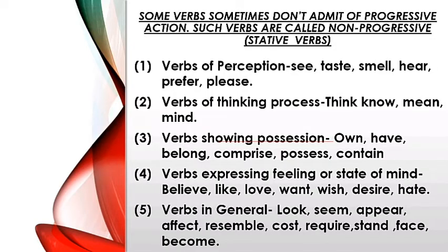Dhyan se suniye — non-progressive aur stative verbs present progressive tense mein action mein use nahi li jati. Verbs of perception — 5 indriyon, 5 senses ko batane wali verbs — jaise see, taste, smell, hear, prefer, please — yeh present continuous tense mein use nahi hoti generally. Verbs of thinking process: think, know, mean, mind — bhi present continuous mein nahi aati. Verbs showing possession: own, have, belong, comprise, possess, contain — yeh bhi present progressive tense mein use nahi hoti. Verbs expressing feeling or state of mind: believe, like, love, want, wish, desire, hate — mostly use nahi hoti, inka use alag tarike se hota hai. Number five, verbs in general: look, seem, appear, affect, resemble, cost, require, stand, face, become — yeh bhi present continuous tense mein generally use nahi hoti.